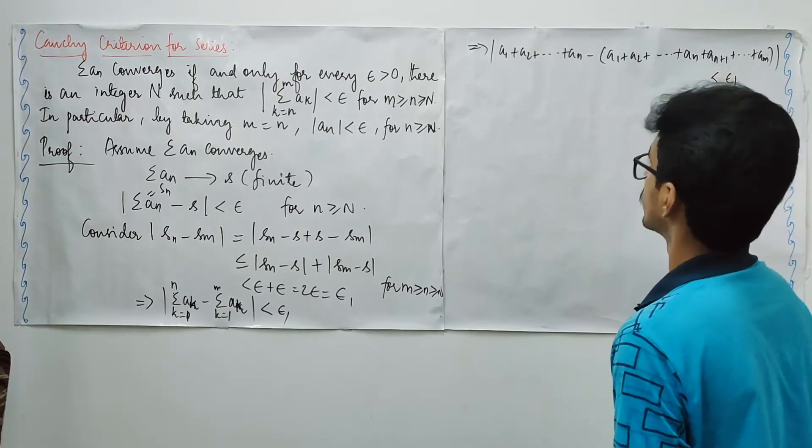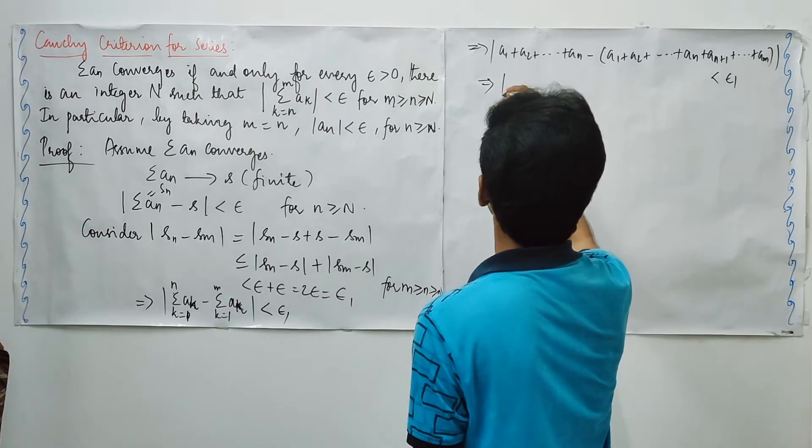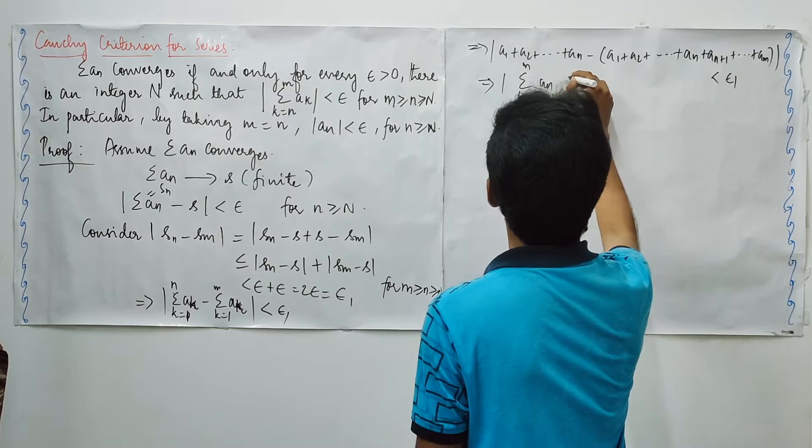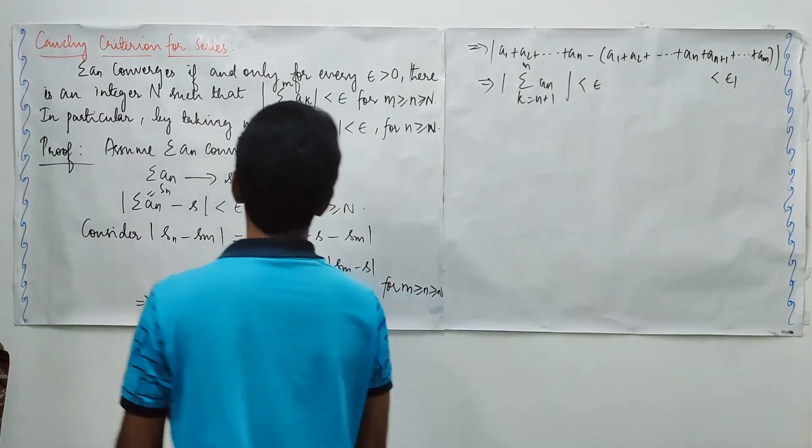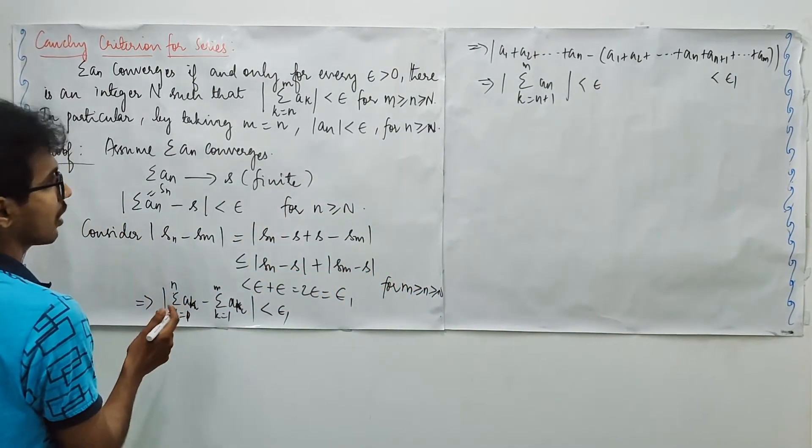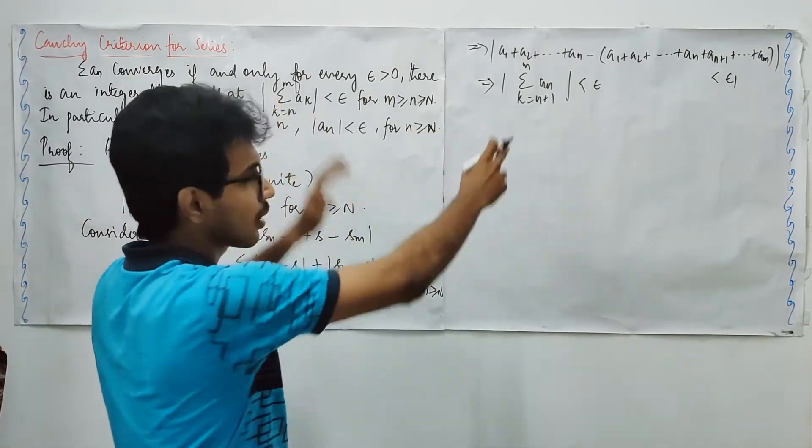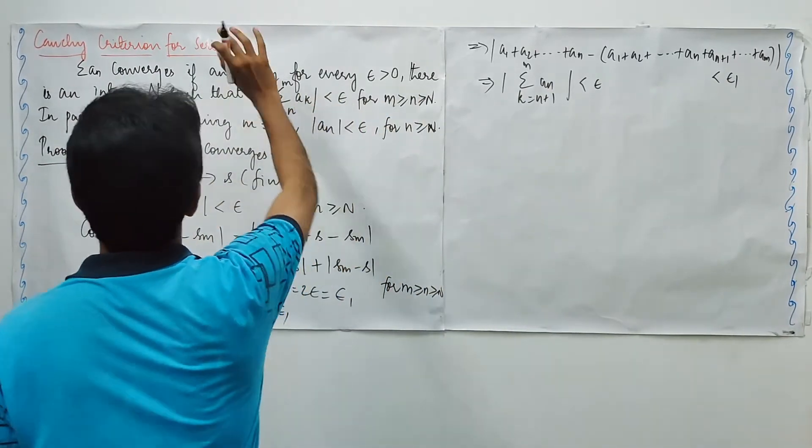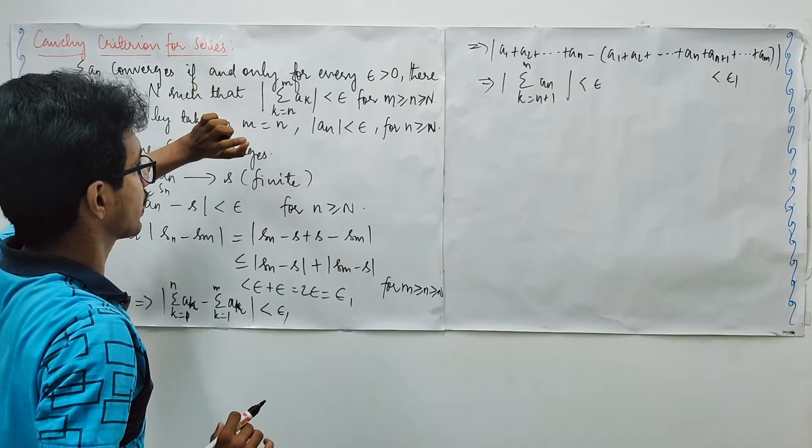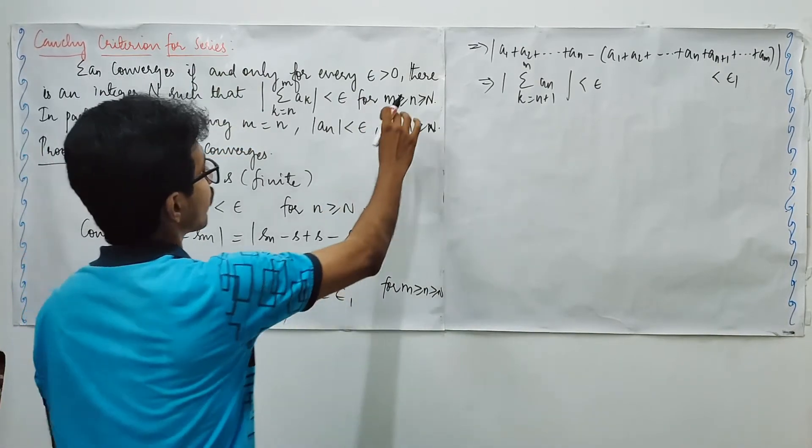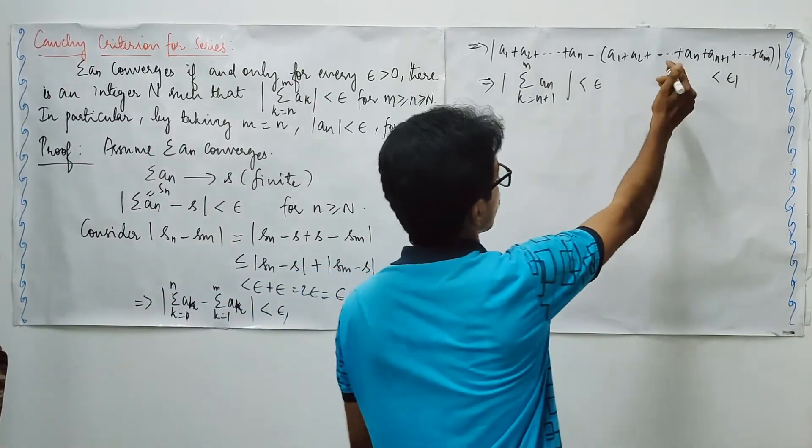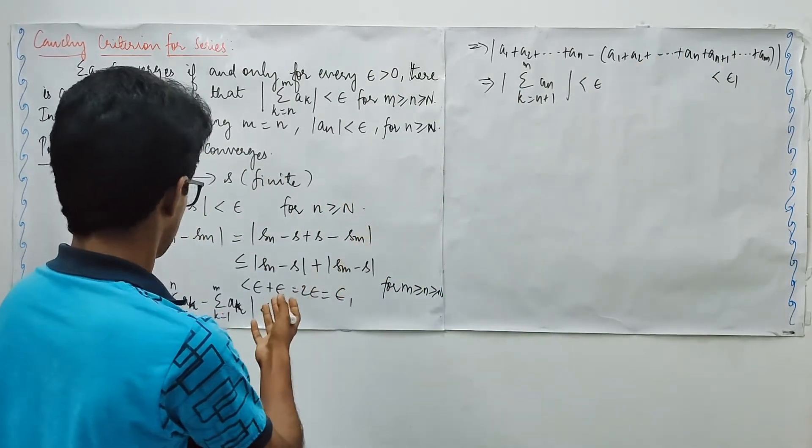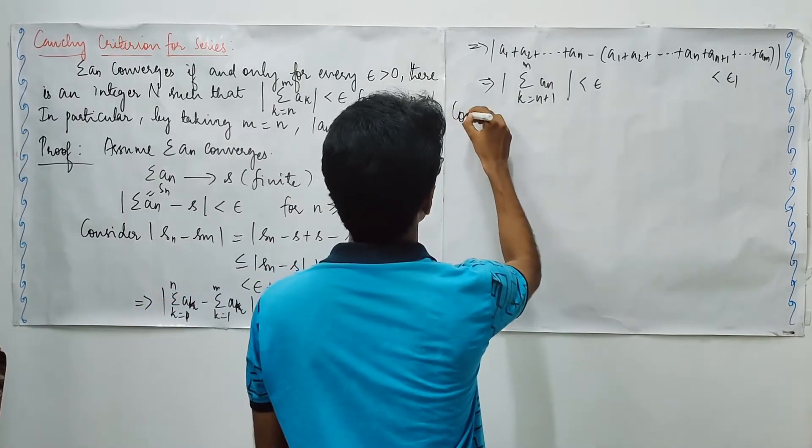And this quantity is less than some negligible quantity. When you expand it, you may see that m is some stage after n. So this quantity is less than epsilon. We are going to have summation k runs from n plus 1 to m, a_k is less than epsilon. And this proves the first part of this.